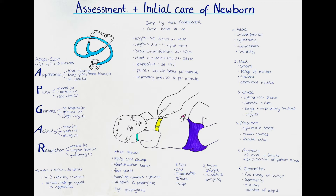APGAR has five letters and each respective letter is indicative of a feature that we observe, and each letter gives points. One letter can give either zero points, one point, or two points. That's why we have five letters, and if all five give two points then the maximum score is 10. I will now mention each letter, what it stands for, and how we grade it.